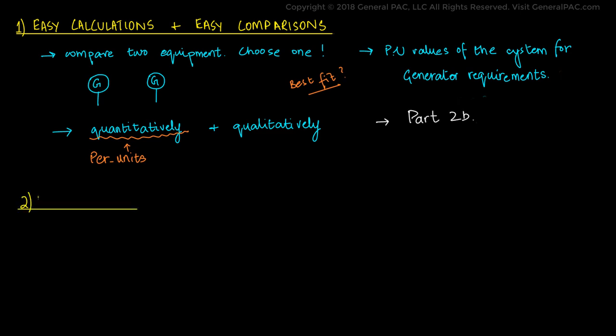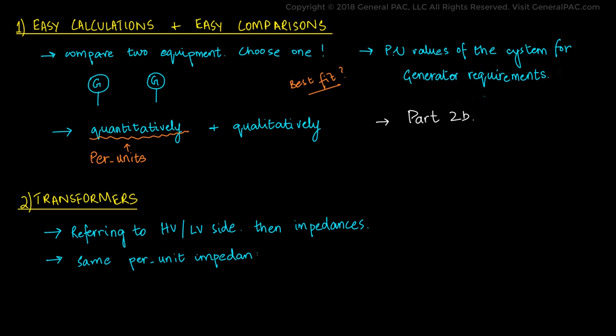The second reason for using per unit systems is the transformers. For transformers, we usually make its equivalent by referring to the low voltage side or the high voltage side. After that, we calculate the different impedances. However, when we are using per unit values for impedances in the transformer, they remain the same for both the low voltage side and the high voltage side. Therefore, calculating one value of per unit impedance is enough and the lengthy process for the other can be omitted. A complete derivation of this has been done in Part 2c of this series.